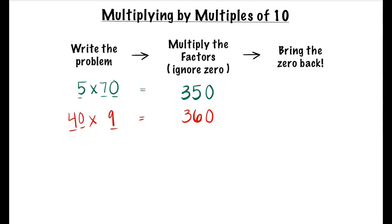Let's write the problem: 2 times 60. We know 60 is a multiple of 10. We're going to multiply just the 2 and the 6, which equals 12. Now let's bring the 0 back. We know 2 times 60 equals 120.